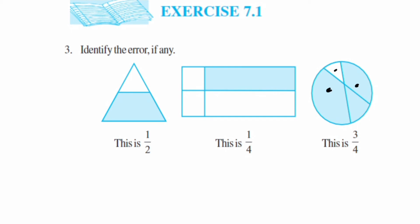One sector is greater than the other one, and the fraction given is 3 upon 4, which is also wrong because the shaded portions are not equal parts. So in general, we can conclude from here that the parts are not equal.